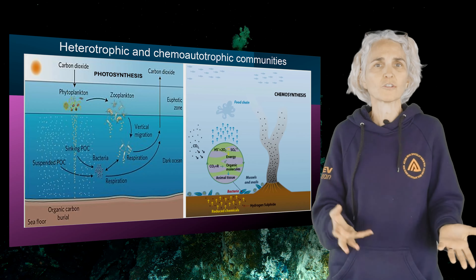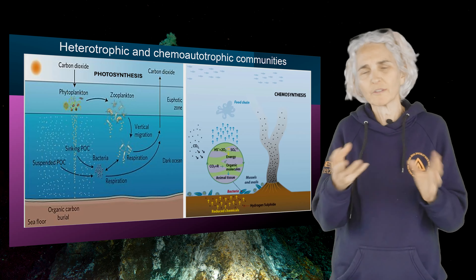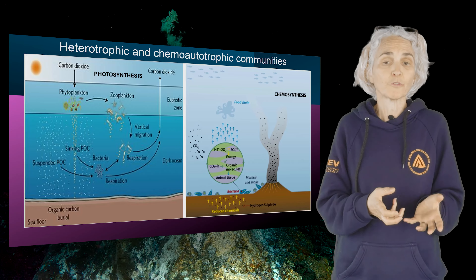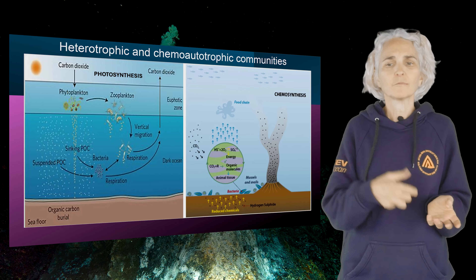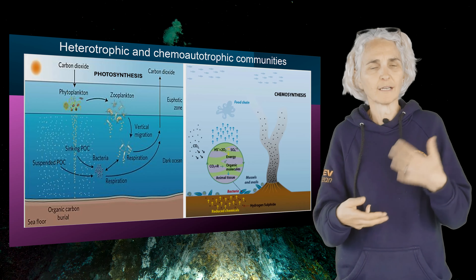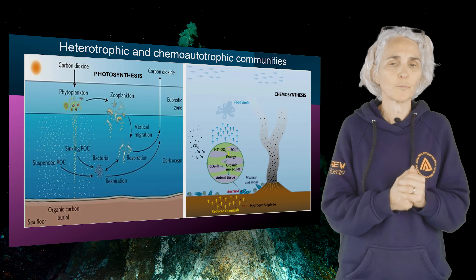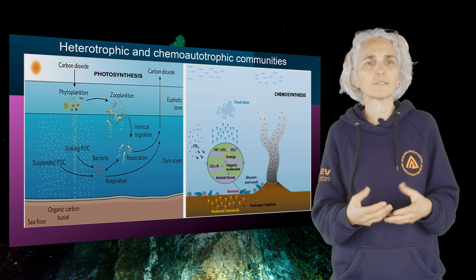However, we also have areas where there is in-situ primary productivity, called autotrophic production. This happens in hydrothermal vents and cold seeps, among a few other smaller ecosystems. The primary producers here are bacteria using reduced chemicals from hydrothermal vents and cold seeps as sources of energy to produce organic matter, which sustains the whole trophic chain.